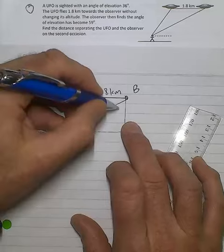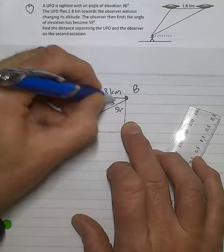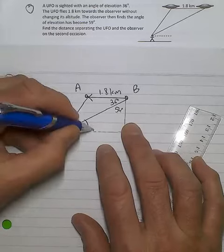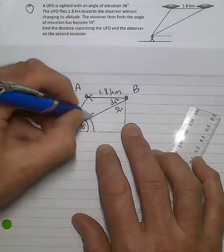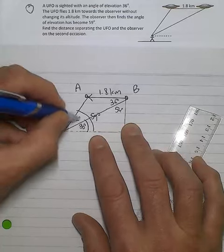That in turn makes the angle up here 54 degrees and 36 degrees. At the second observation it becomes 59 degrees or a difference of 23 degrees.